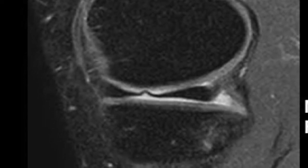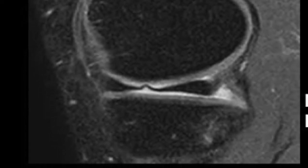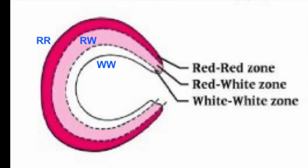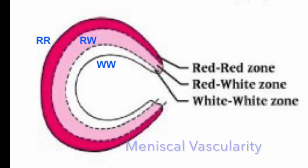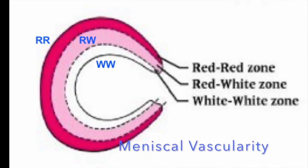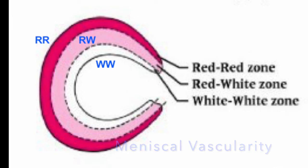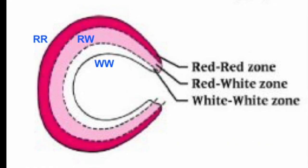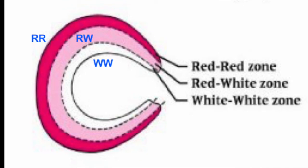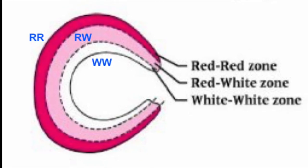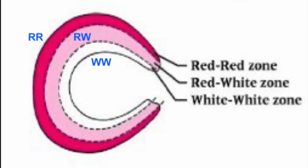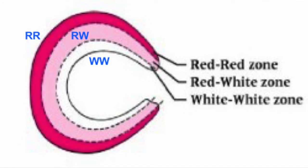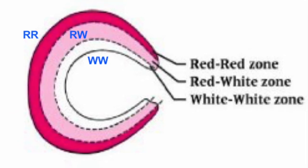Before I go to the details of meniscal tears, I need to tell you that the meniscus is divided in three zones. The peripheral portion is highly vascular, then there's a central part known as the red-white zone which has an okay blood supply, whereas the innermost free edge is called the white-white zone which has no blood supply.